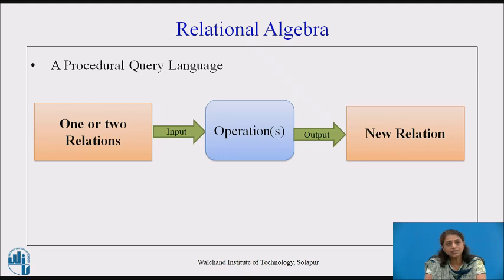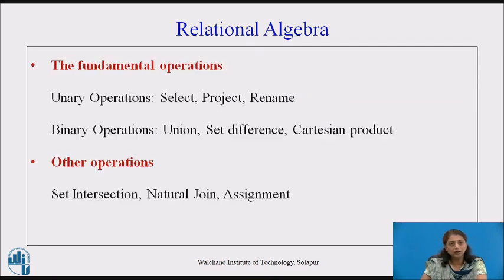Relational algebra is a procedural query language. It has a set of operations which takes one or two relations as input and produces a new relation. The fundamental operations are select, project, rename, union, set difference, and Cartesian product. Select, project, and rename are unary operations, taking one relation as input, whereas union, set difference, and Cartesian product are binary operations, taking two relations as input.